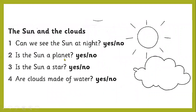We also discussed the sun and clouds. Can we see the sun at night? No. Is the sun a planet? No — the sun is a star, and the planet is our Earth. Is the sun a star? Yes. Are clouds made of water? Yes, tiny drops of water.